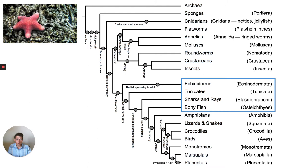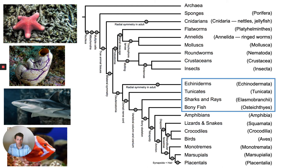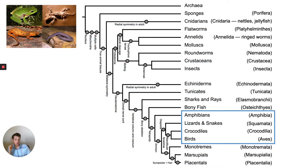Down here we've got our echinoderms all the way down through our bony fish — that includes echinoderms, tunicates, sharks and rays which are elasmobranchs, and bony fish, osteichthyes — 'oste' meaning bone, like osteoporosis. And then we've got our tetrapods, which are amphibians all the way down to those placentals.